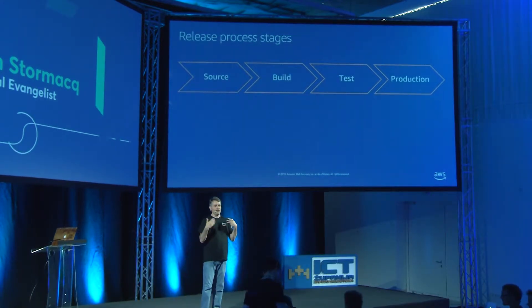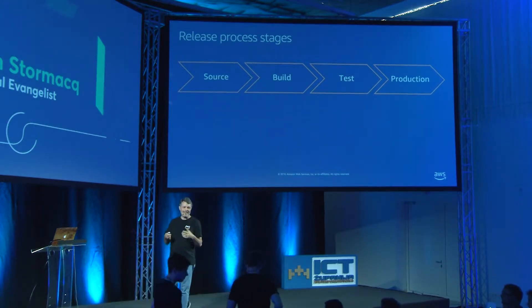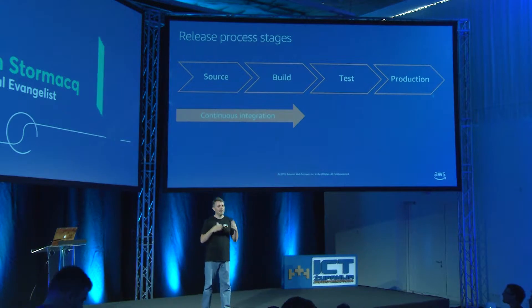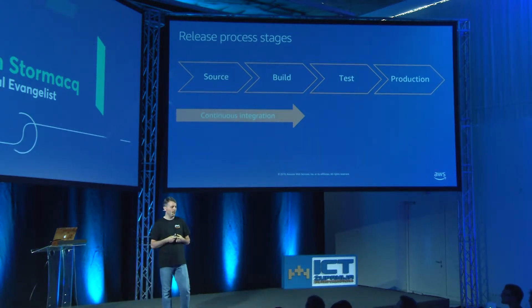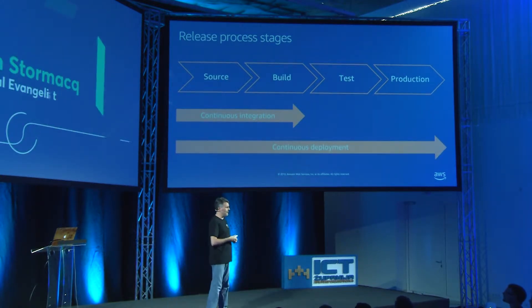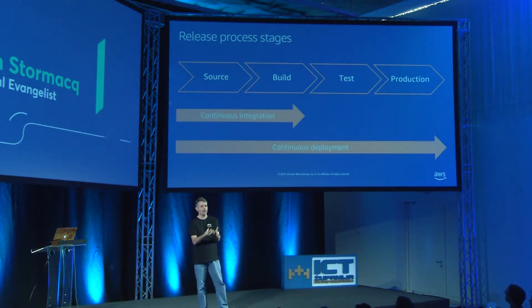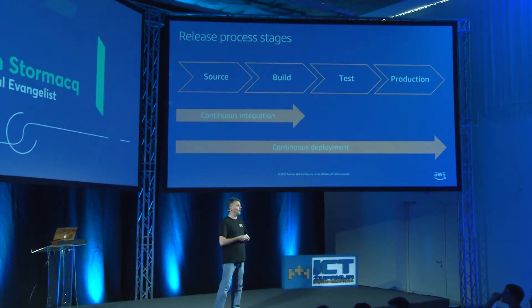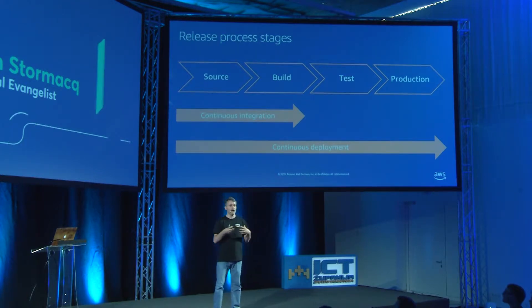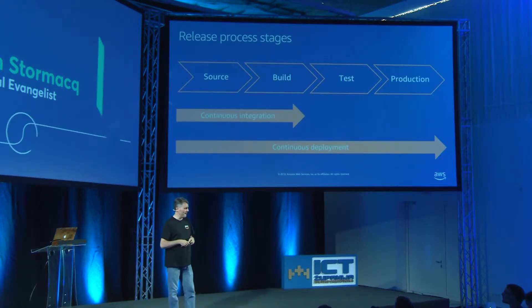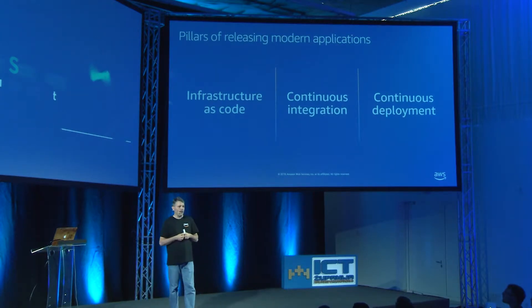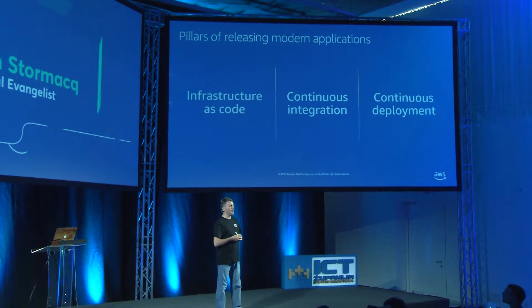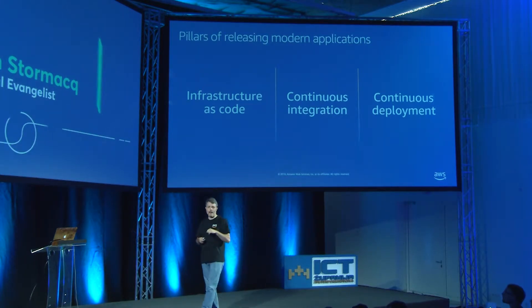The release process — I'm sure you've all seen this graph: source, build, test, production. Continuous integration covers the first two phases: managing your source code and building, with unit tests as part of the build. If you want to go a step further, it's continuous delivery or continuous deployment. Continuous delivery means producing the artifact to be deployed later; continuous deployment means actually deploying the artifact into production. There are three pillars: infrastructure as code, continuous integration, and continuous delivery.